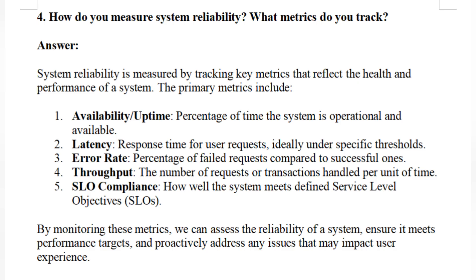Question four: how do you measure system reliability, and what metrics do you track? System reliability is measured by tracking key metrics that reflect the health and performance of a system. The primary metrics include: first, availability — the uptime percentage of time the system is operational and available; second, latency — response time for user requests, ideally under specific thresholds.